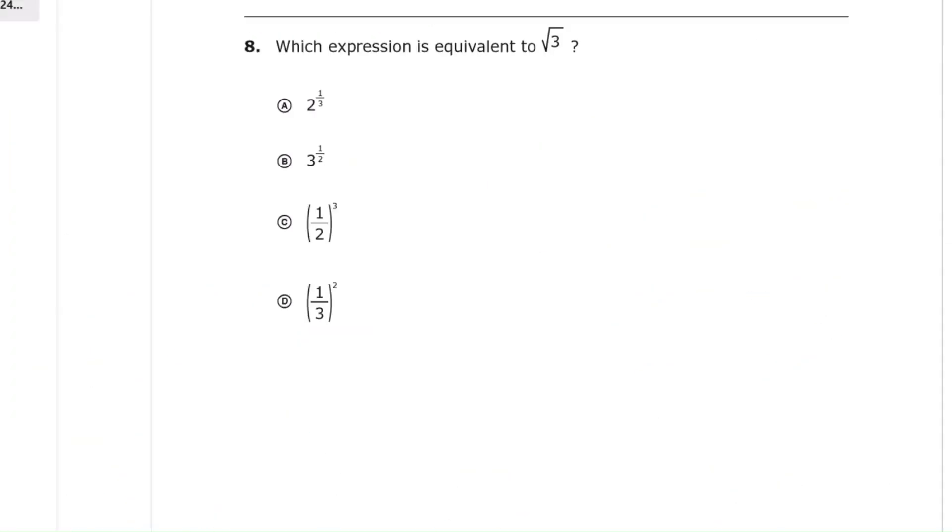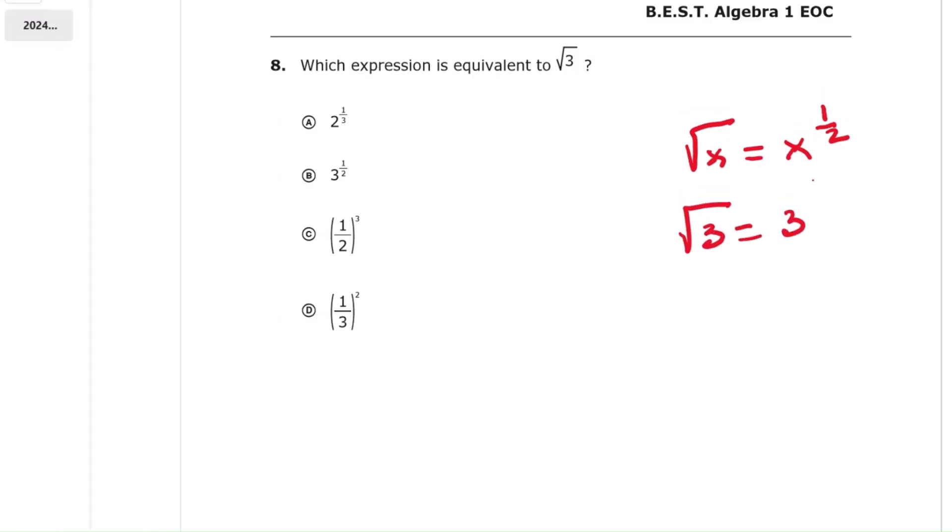Question 8, the expression is the square root of 3. Step 1, recall that a square root can be written as a power with exponent 1 half. Step 2, rewrite the square root of 3 as 3 raised to the one half power. Final result, 3 to the one half. Answer, choice A.